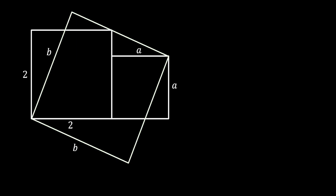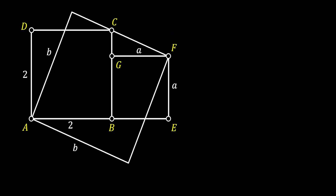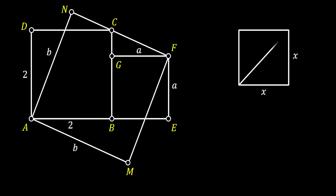Let's label all the vertices of our squares. We'll label the vertices of our bigger square as A, B, C, and D. Then we will label the remaining vertices of the smaller square as E, F, and G, and finally the remaining vertices of the tilted square as M and N. As a quick reminder, if we have a square with side X and pull its diagonal, the length of the diagonal must be equal to the side times the square root of 2. We will use this in our case.